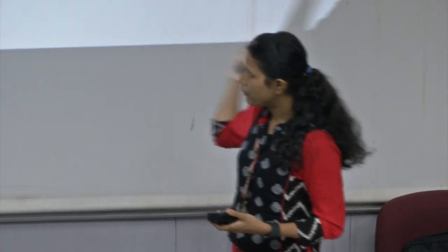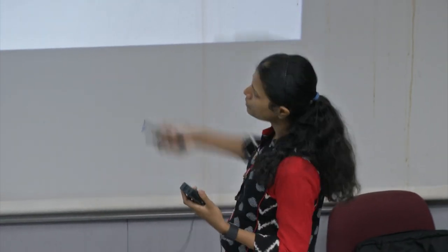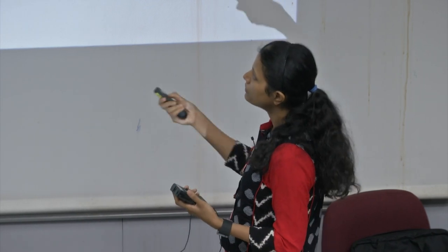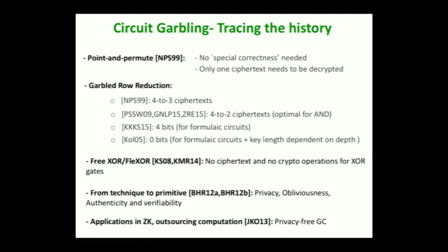A very interesting set of papers from 2012 elevated garbled circuits from a technique to a primitive. They defined a nice set of features: privacy, obliviousness, authenticity, and verifiability. Since then people have worked on garbled circuits independently of specific applications, trying to optimize the number of ciphertexts, computation cost for the garbler, and so on. We have seen interesting applications of garbled circuits beyond 2PC, including zero-knowledge proofs and outsourcing of computation.